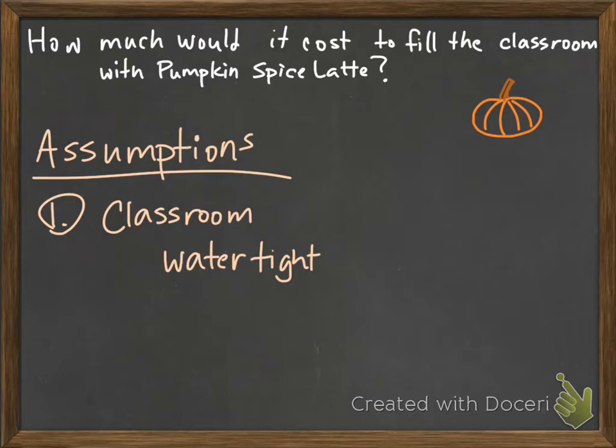We're going to assume that our classroom is empty, there's not a lot of desks or anything like that. We're also going to assume some dimensions: 41 feet by 32 feet by 9 feet. We're going to use that to find our volume.